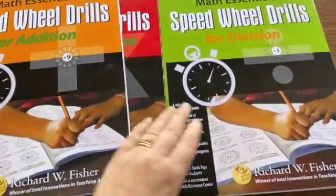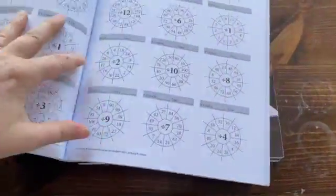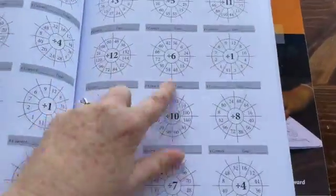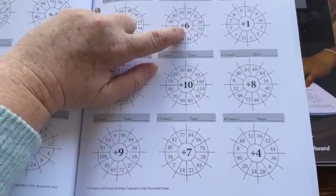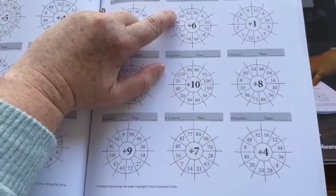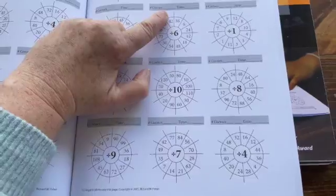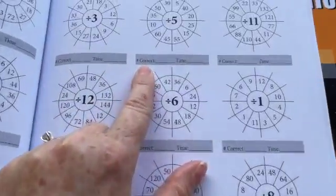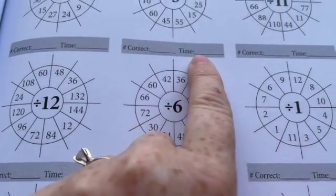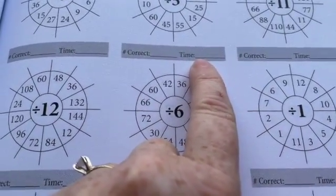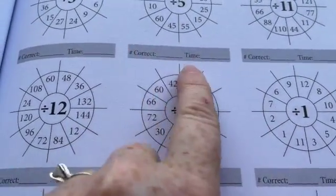Let me show you what these speed drills look like. They are these wheels and you go 60 divided by 6 is 10, and then you would write 10 here. 42 divided by 6 is 7, you write it here. There's also a place to write the number correct and how long it took you, so the student can see how many they got correct and time themselves to see their progress.